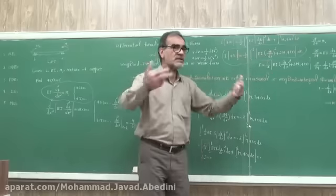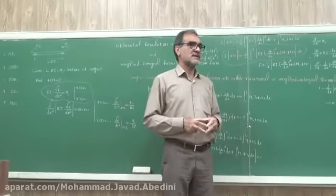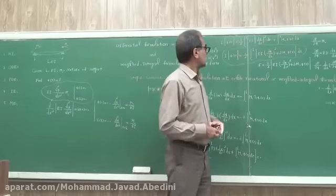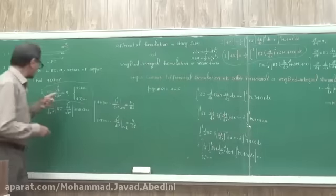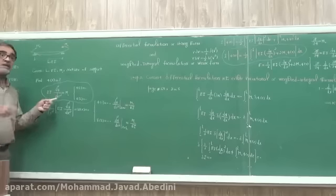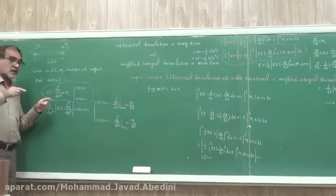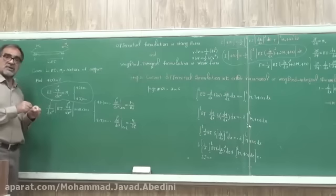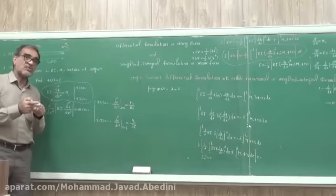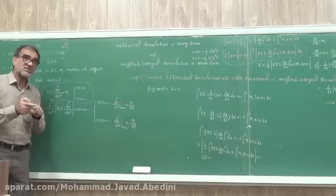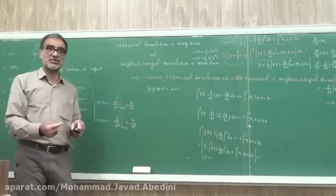So we have two implications. The consequence is clear. What's the consequence? If we want to find an approximate solution here, meaning we want to approximate the direct formulation, our approximation must have both itself and its derivative continuous so that the second derivative exists.